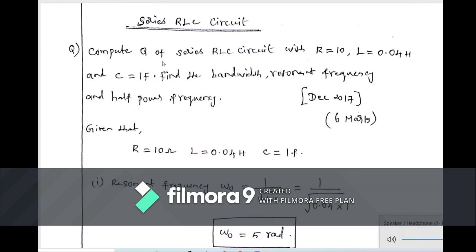This is a smart and important type of problem. The given data: R = 10 ohms, L = 0.04 henry, C = 1 farad. In order to calculate the quality factor, we first need to know the resonant frequency, so we calculate that first.